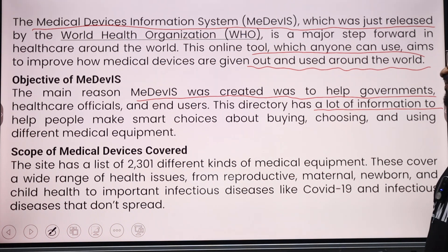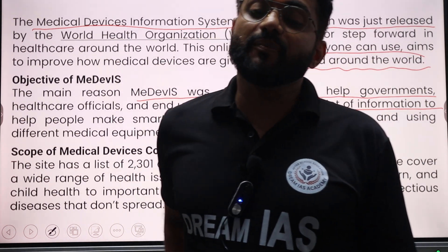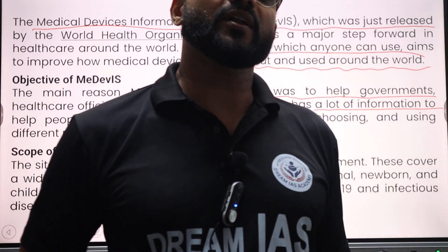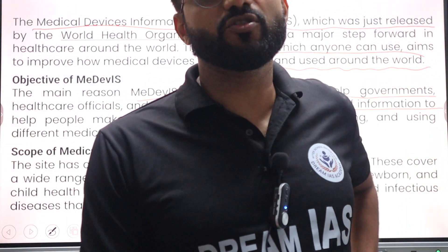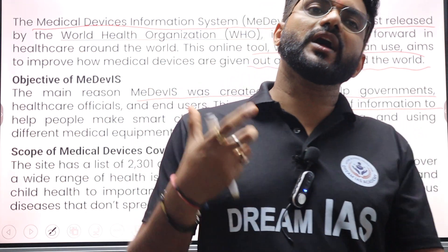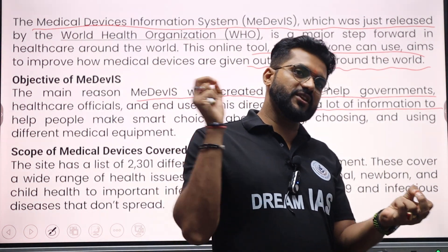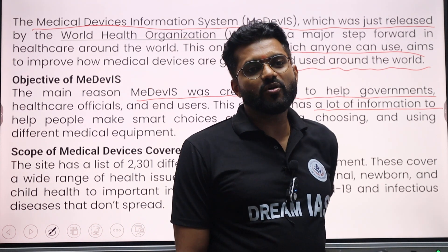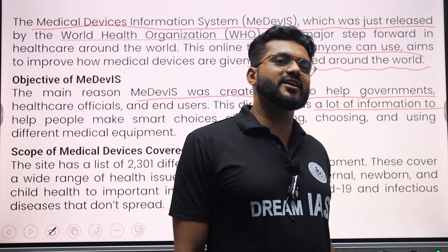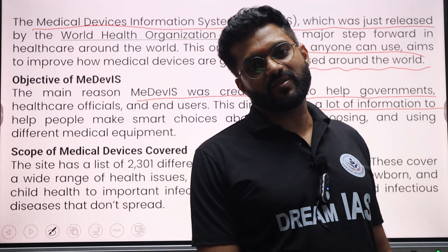Some medical equipment has specific usage guidelines. For example, when we use a glucometer at home, we use a needle in a plastic lancet to punch the skin. After use, we don't need to break the needle — we can store it safely, which is important for diabetes checks.